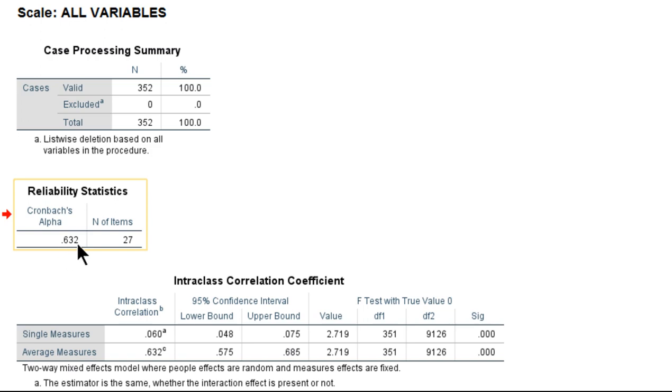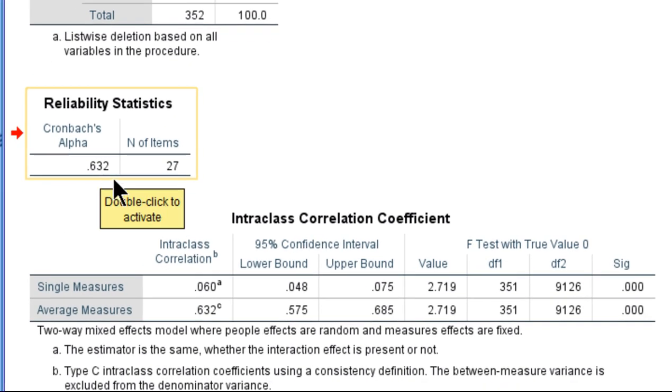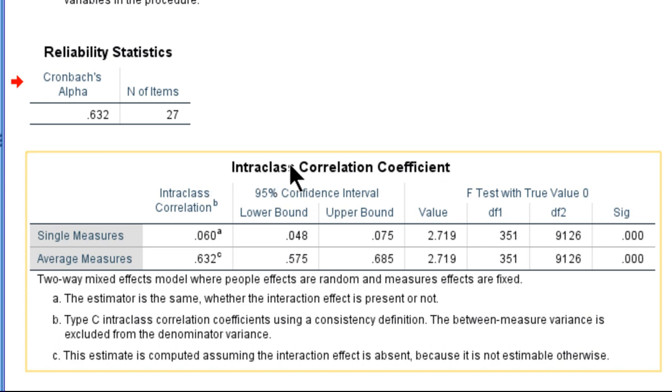And you can see here that reliability was estimated at 0.632 for Cronbach's Alpha and the Intraclass Correlation Coefficient also equal to 0.632 based on the two-way mixed model where you can see it says people effects are random and measures effects are fixed.